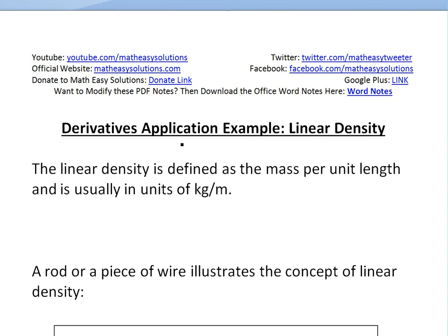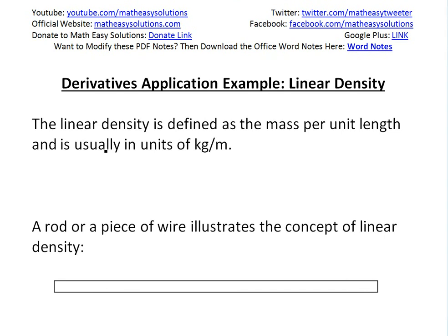Basically derivatives can be viewed as rate of change, and you can see more on that in the video links below. Linear density is defined as the mass per unit length and is usually in units of kilograms per meter. We write it as rho, this Greek symbol usually used for density, so rho equals mass divided by length. This is the definition of linear density.